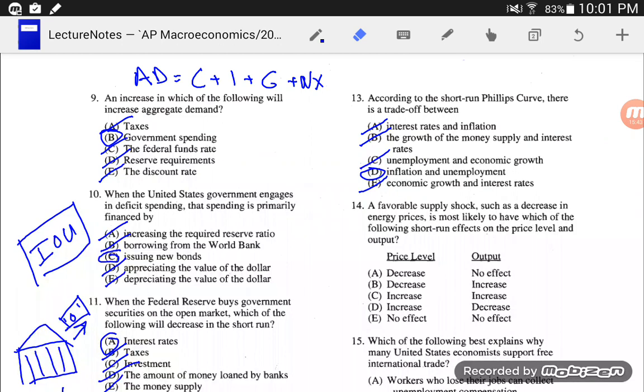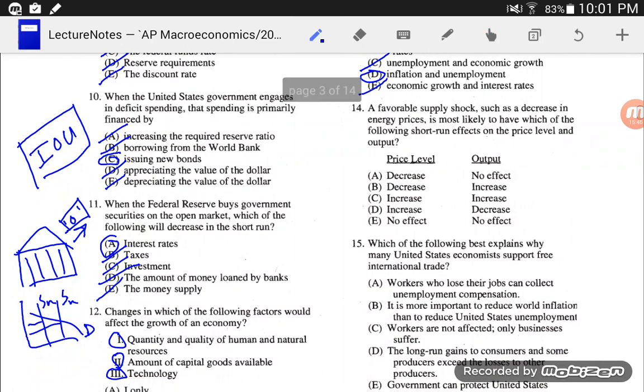Number 14, a favorable supply shock. A supply shock... as soon as I read that, favorable supply shock has something to do with the aggregate supply curve. A favorable supply shock, such as a decrease in energy prices, is most likely to have which of the following short-run effects on price level and output? Well, to answer that question, I simply draw my aggregate demand, aggregate supply. And we have a favorable supply shock. So it actually decreases costs and increases supply. So it looks like price level is going to decrease. And output is actually going to increase. I know that was really sloppy, but that graph is going to explain my answer. I'm going to go with 14B.